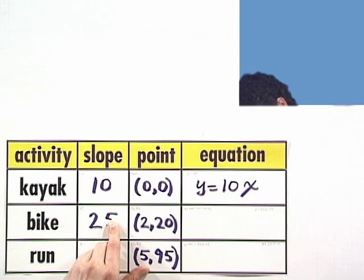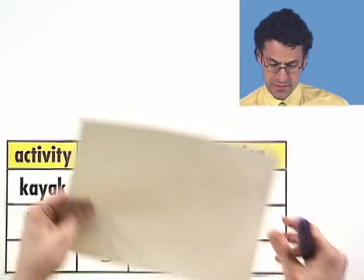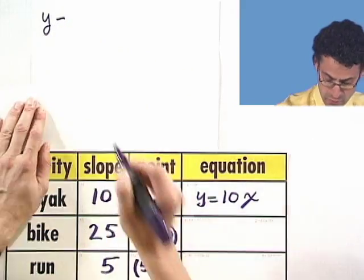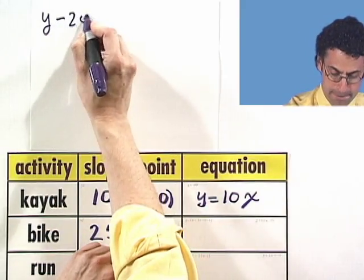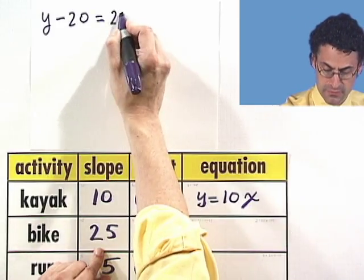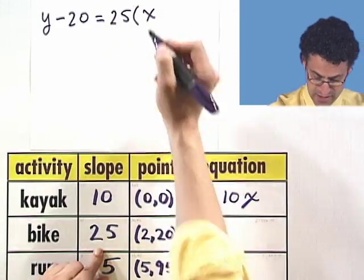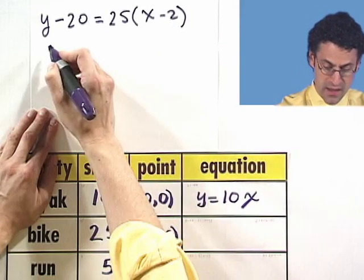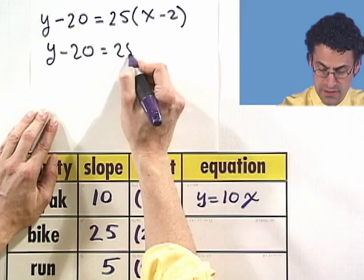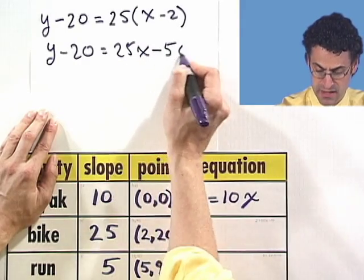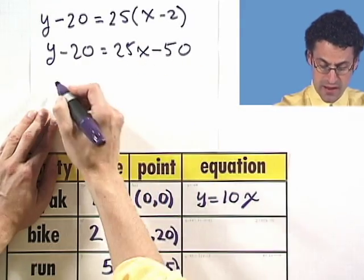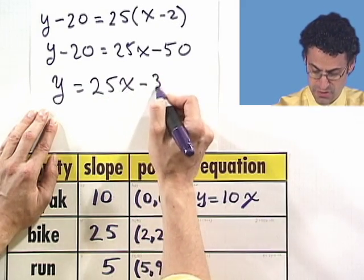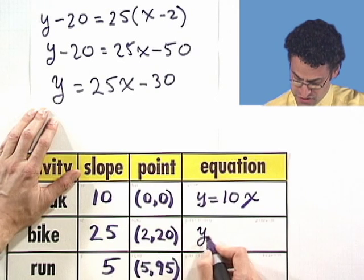Let me show you this one a little bit closer up so you can see this. If I use point slope form, what I see here is y minus the y value, which is 20, equals the slope, 25, times x minus the x value, which is 2. And now we can solve this for y. And I see y minus 20 equals 25x minus 50. And if I bring the 20 over by adding 20 to both sides, I see y equals 25x minus 30. And so that's the equation for this portion.